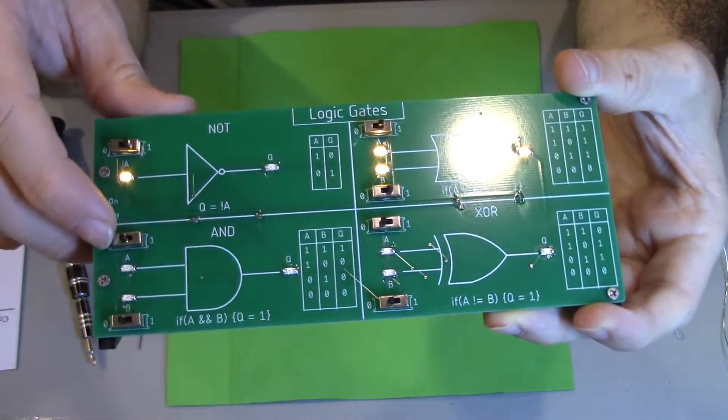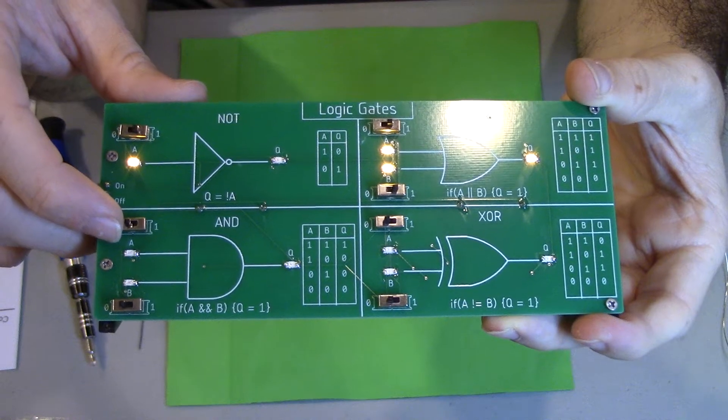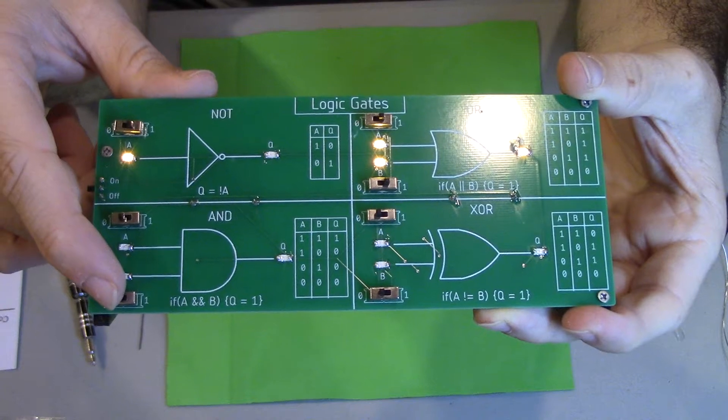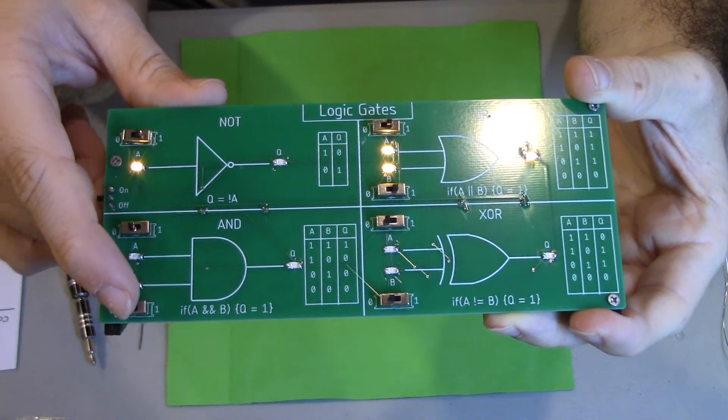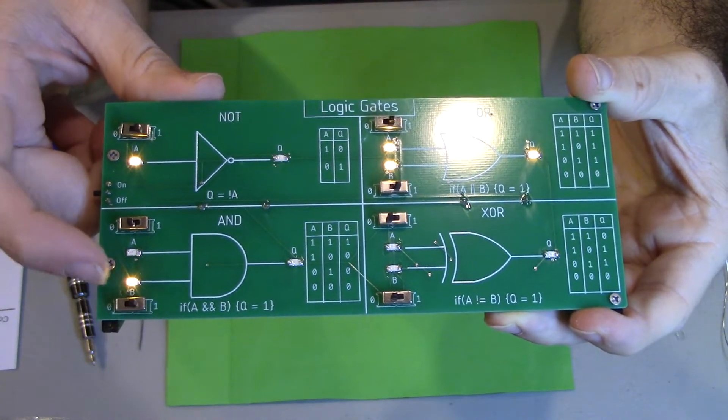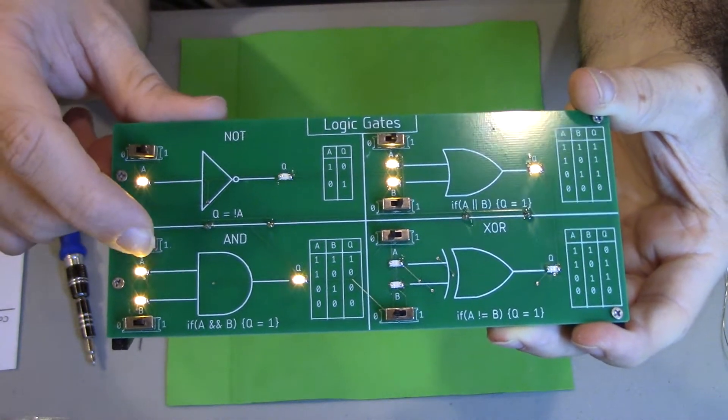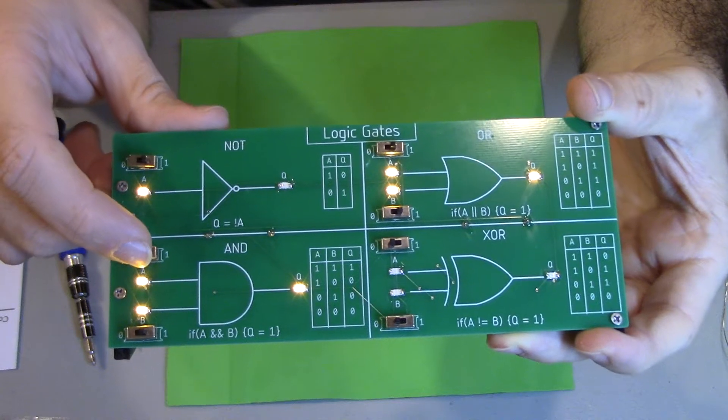Let's go to our AND gate. If we have current passing through A and B, we'll get an output. But only if current is passing through both of them. Let's try B first. Okay, B has input current, but we have no output current. This happens when we have B and A. We have an output current.